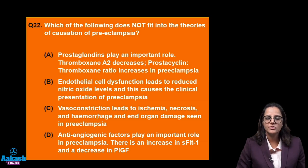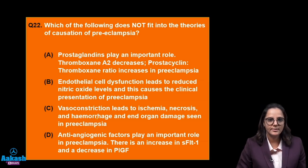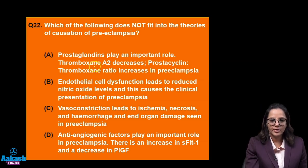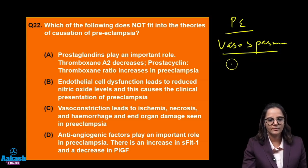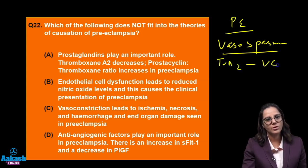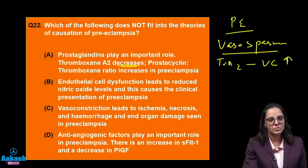Which of the following does not fit into the theories of causation of preeclampsia? Even without knowing all the details, let's try with general knowledge. In preeclampsia we know there is vasospasm — the artery is constricting. Thromboxane A2 is a vasoconstrictor, so it should ideally be increasing. The option says it decreases — that raises a query. Endothelial cell dysfunction leads to reduced nitric oxide, which is a vasodilator, so its level reducing in preeclampsia seems right.